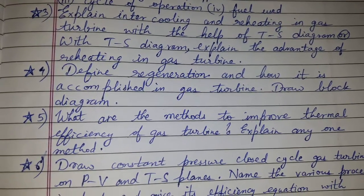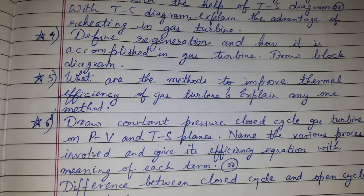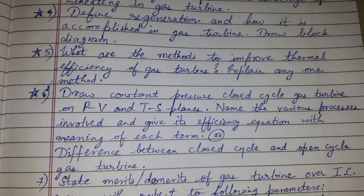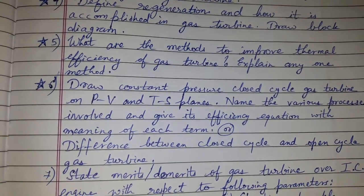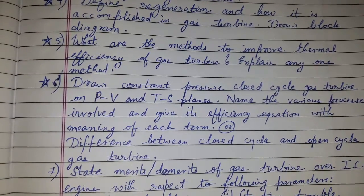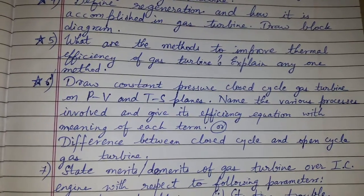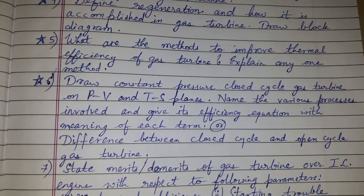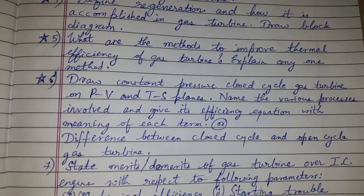What are the methods to improve the thermal efficiency of a gas turbine? Explain any one method. Draw constant pressure closed cycle gas turbine on PV and TS planes. Name the various processes involved and give its efficiency equation with the meaning of each term.